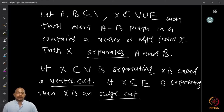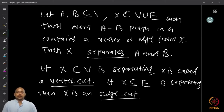If X is a subset of vertices alone and is separating, then X is called a vertex cut. A separating vertex set is called a vertex cut. Similarly, a separating edge set — where X is a subset of edges only — is called an edge cut. Removing the edges of X destroys the connection between A and B, giving us an A-B edge cut and an A-B vertex cut.